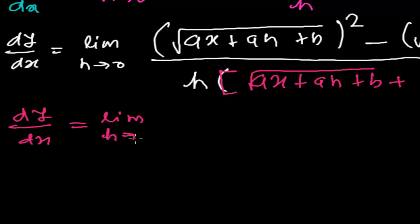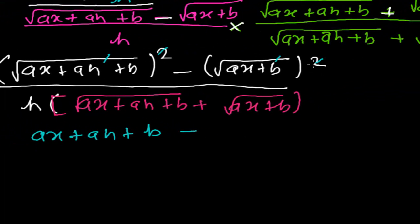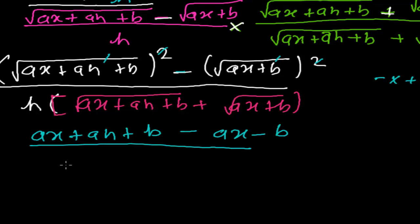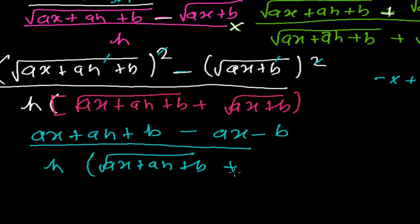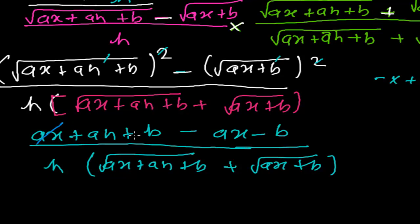Now the whole square cancels the root, giving ax plus ah plus b, minus ax plus b — the minus sign comes from the bracket. So the numerator becomes ax plus ah plus b minus ax minus b, divided by h times root over ax plus ah plus b plus root over ax plus b. The ax terms cancel and the b terms cancel.